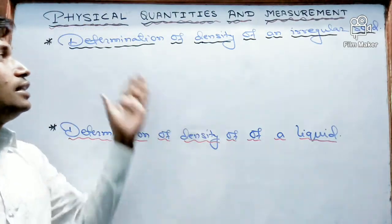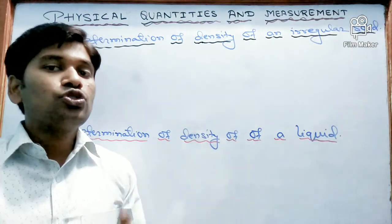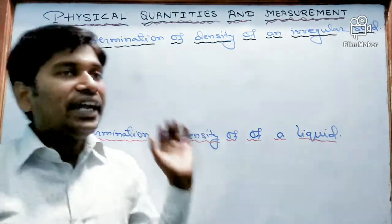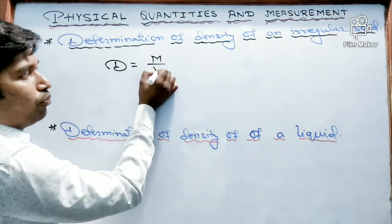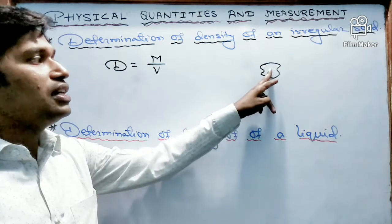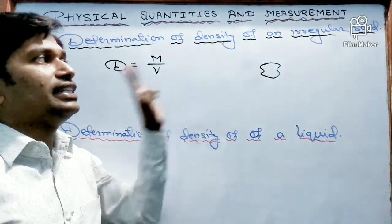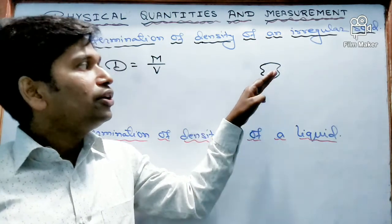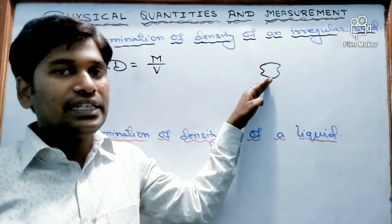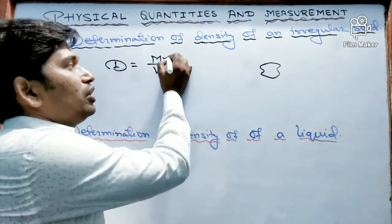Now let us see the determination of density of an irregular solid and of a liquid. To find the density of an irregular solid, we know density equals mass by volume. So we must find both mass and volume of the body. To find the mass, we will determine the mass of the irregular solid with the help of a suitable balance such as a physical balance. From the physical balance, we will calculate the mass of the irregular solid body.